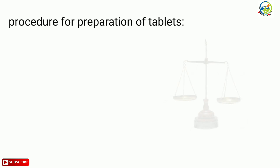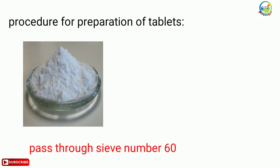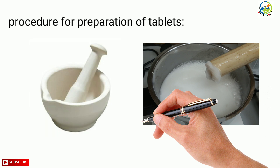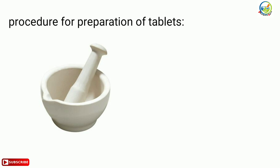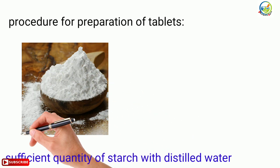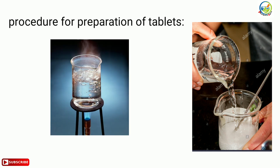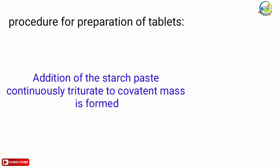The procedure: weigh the required quantity of paracetamol, lactose, and pass through sieve number 60. Add starch paste slowly to the powder mixture and mix thoroughly for uniform distribution of the binding agent. Starch paste should be prepared by mixing sufficient starch with distilled water and warming to a sufficient temperature to make a thick paste. Continue addition of the starch paste until a wet cohesive mass is formed.